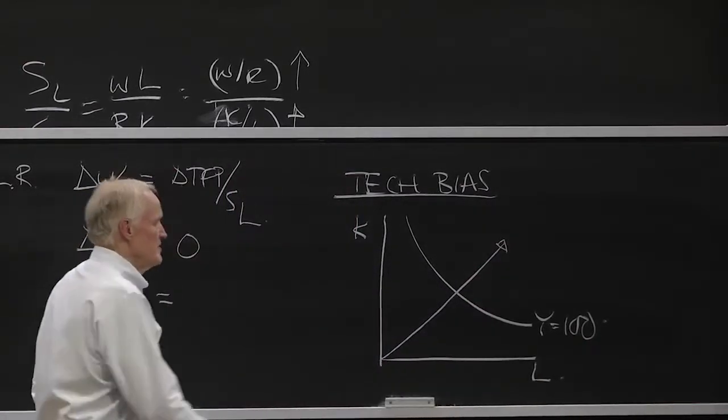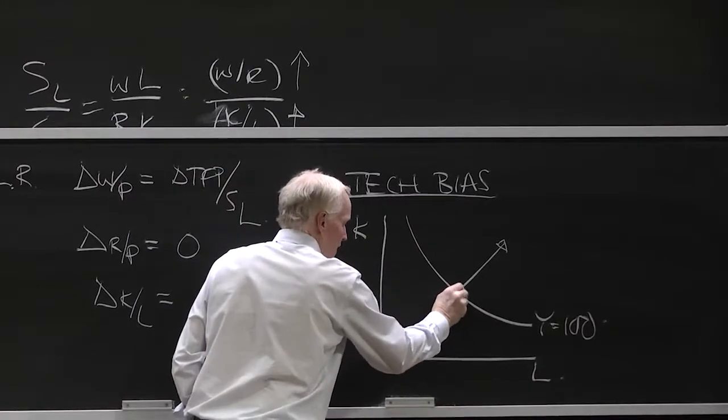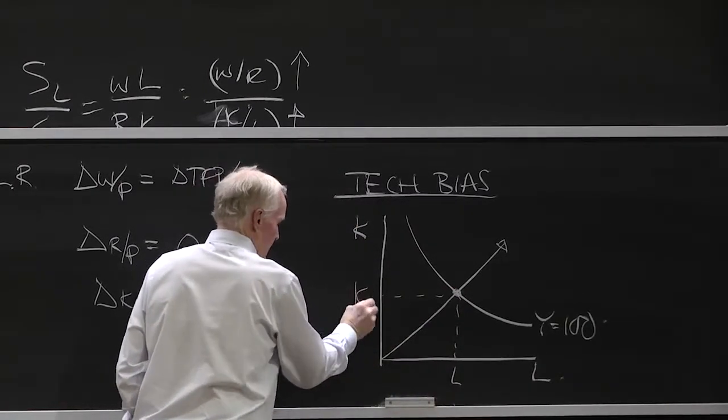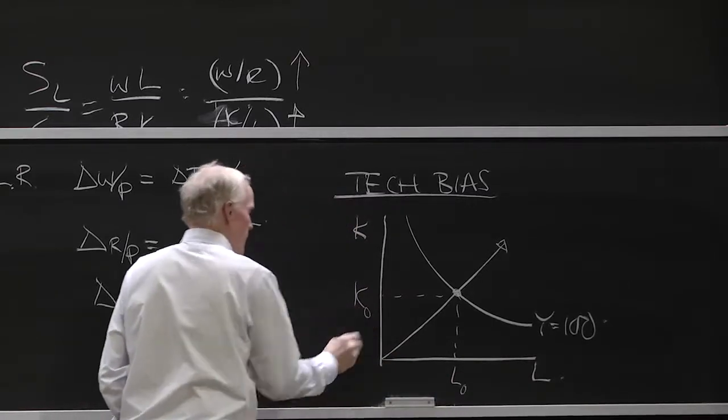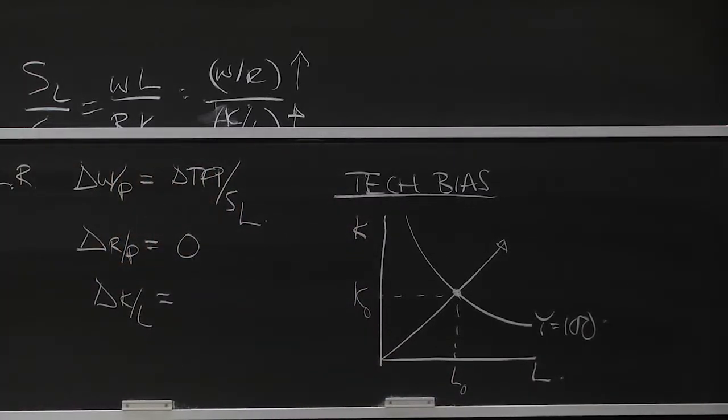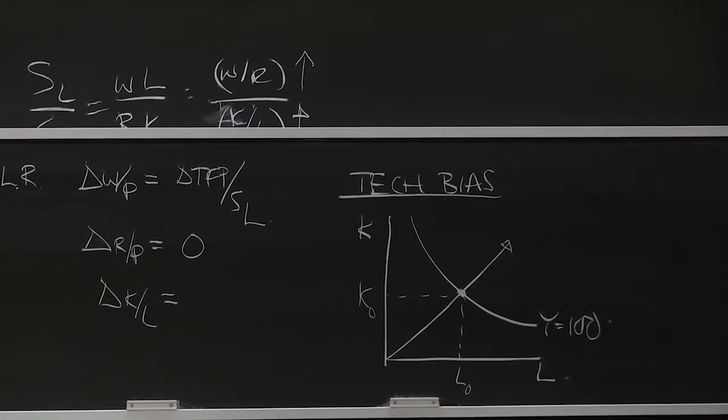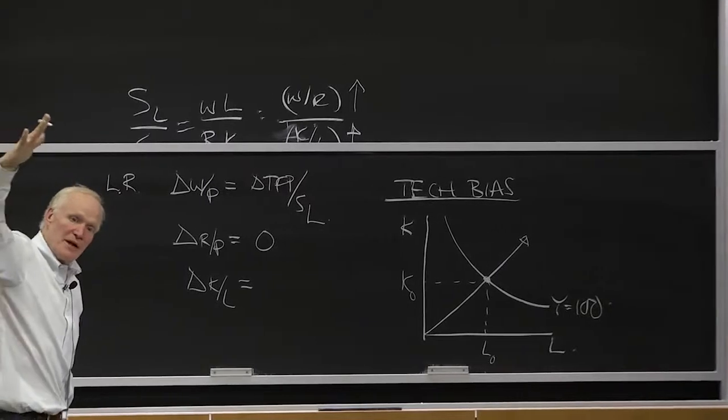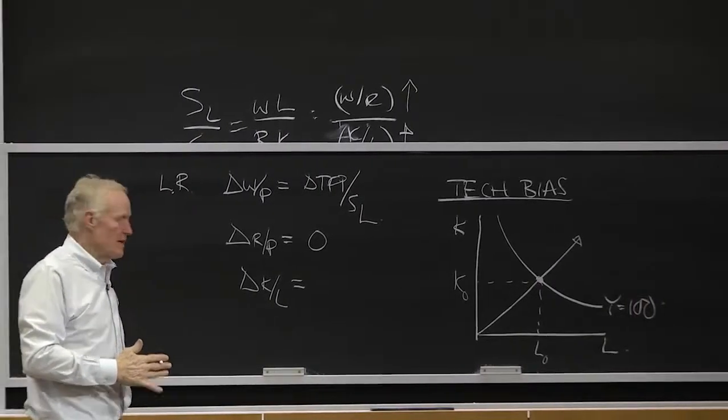What do we mean by, say this is L. That's our initial output. What do we mean by technical progress? What happens to the Y equals 100 isoquant when there's technical progress? Which way does it shift? In, right. That's the part you have to remember. Technical progress is shifting in. Less resources. The production function is shifting out, but that means the isoquant is shifting in.